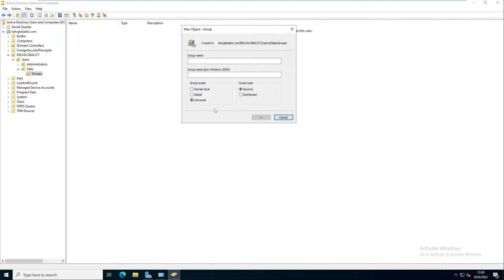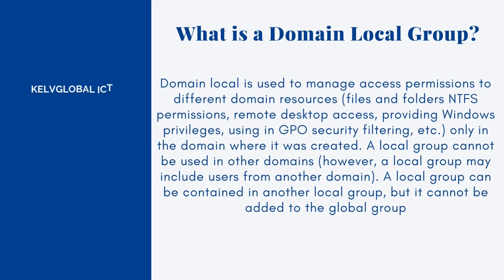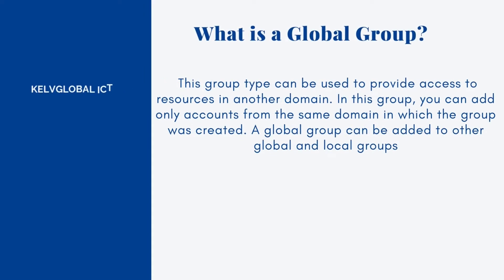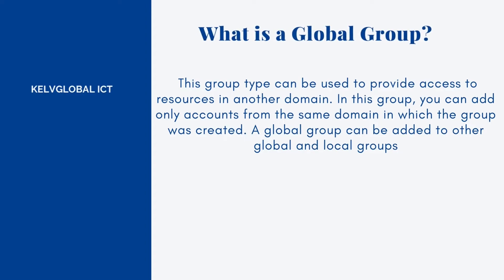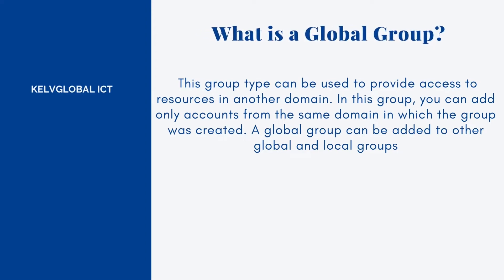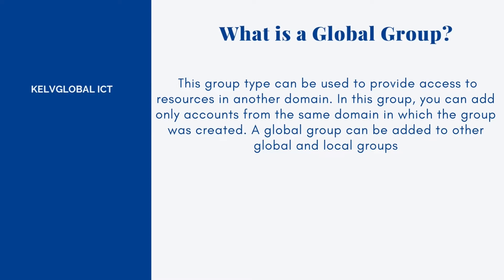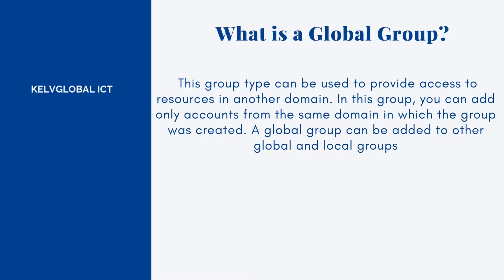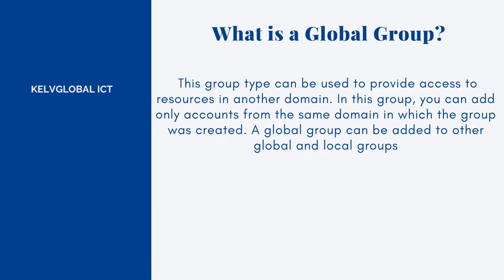The Domain Local group is used to manage access permissions to different domain resources like files and folders, NTFS permissions, Remote Desktop, and Windows privileges using Group Policy. The Global group can be used to provide access to resources in another domain, but you can only add accounts from the same domain in which the group was created — meaning you cannot add a user from a completely different domain.